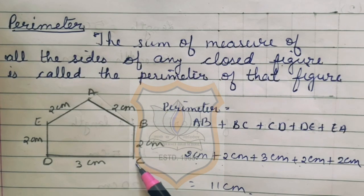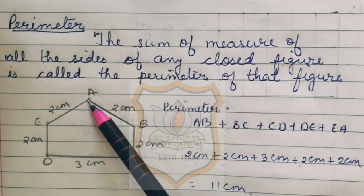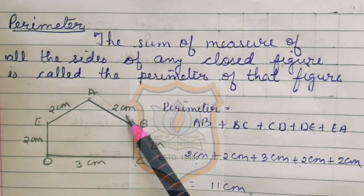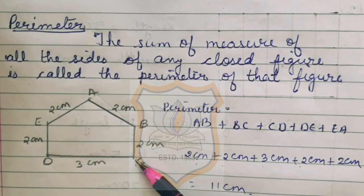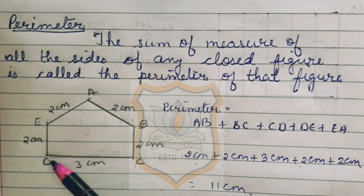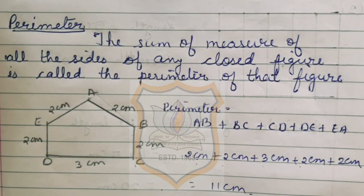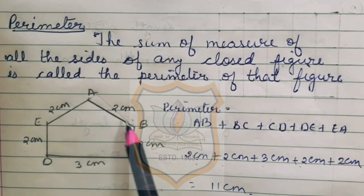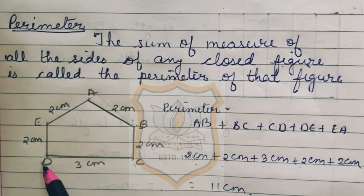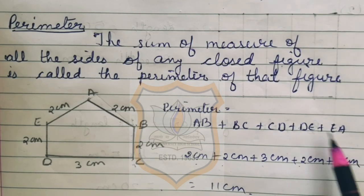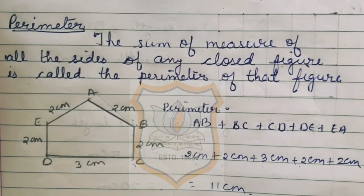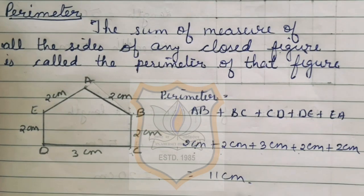For example, here a figure is given. You can see this side has 2 cm, this side has 2 cm, this side has 3 cm, this side has 2 cm, and this side has 2 cm. Now to find out the perimeter, we have to add all the sides. So perimeter is equal to AB plus BC plus CD plus DE plus EA. By adding all the sides, we get the answer 11 cm.